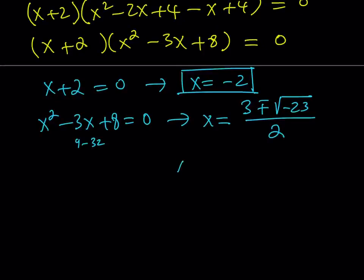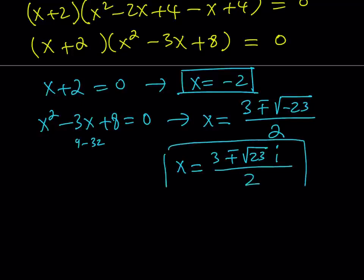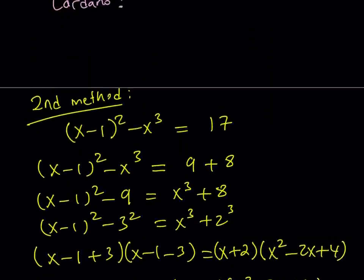Let's go ahead and write them as complex numbers. Square root of negative 23 is going to be plus minus square root of 23 times i. So we're going to include our imaginary unit. And these are going to be the complex solutions. And those are basically all the solutions to our cubic.